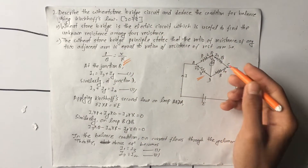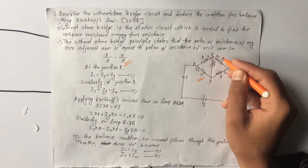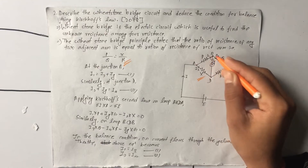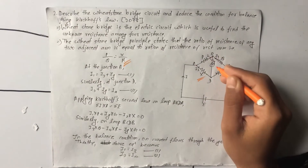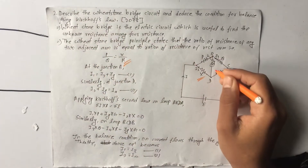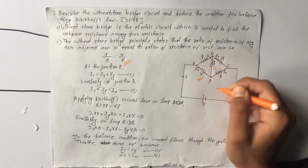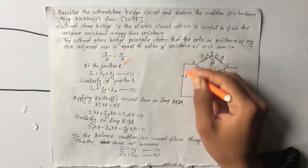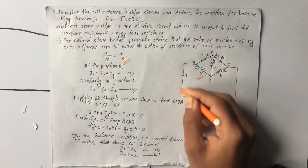To prove this, we will make a circuit with four resistances. Points B and D have a galvanometer connected between them. The balance condition of the Wheatstone Bridge is when zero amount of current passes through the galvanometer. In this case, we apply Kirchhoff's laws with battery current I.